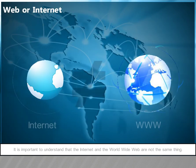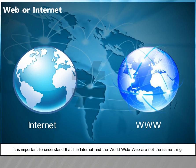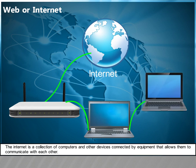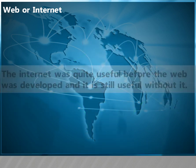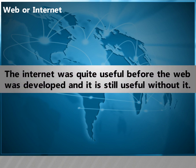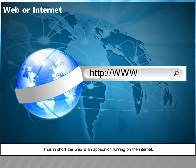It is important to understand that the Internet and the World Wide Web are not the same thing. The Internet is a collection of computers and other devices connected by equipment that allows them to communicate with each other. The Web is a collection of software and protocols that has been installed on most, if not all, of the computers on the Internet. The Internet was quite useful before the Web was developed, and it is still useful without it. The Web is a collection of interconnected documents and other resources linked by hyperlinks and URLs. In short, the Web is an application running on the Internet.